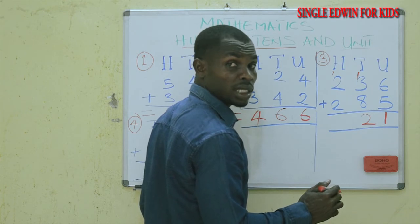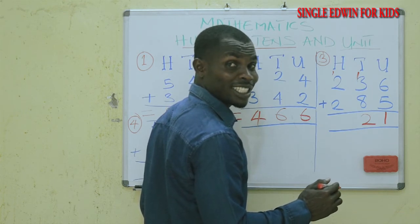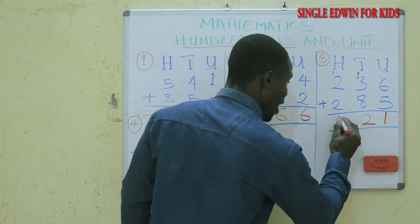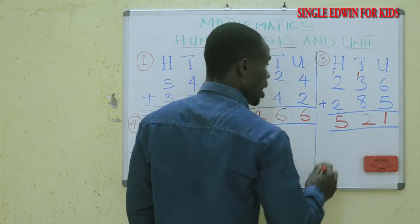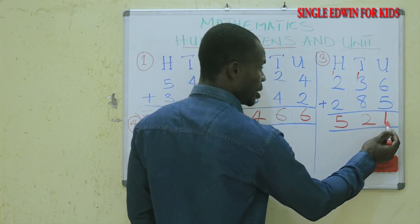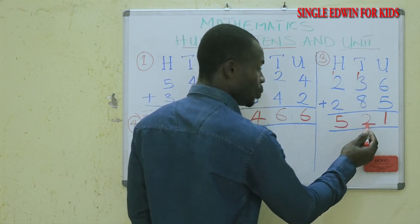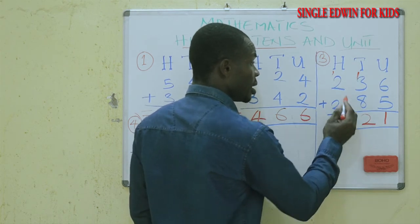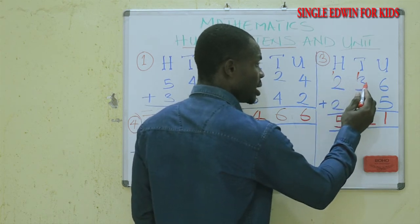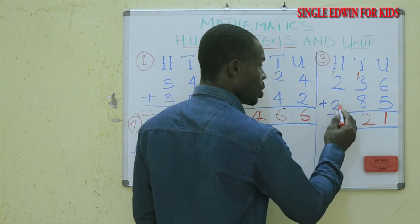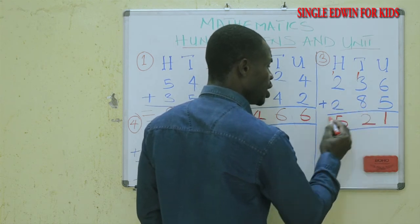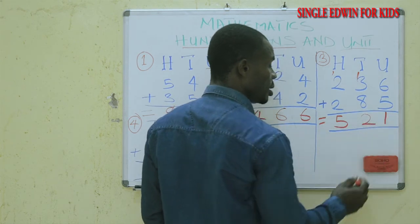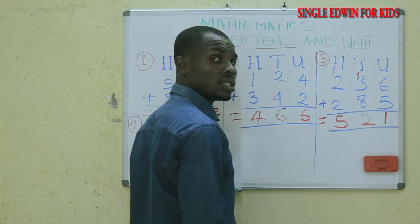That carried one plus two is three, and three plus two is five. So the unit is one, the tens is two, and the hundreds is five. Two hundred and thirty-six plus two hundred and eighty-five is equal to five hundred and twenty-one. That is the answer.